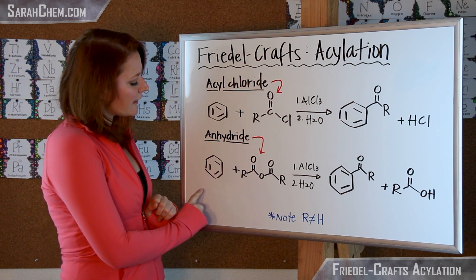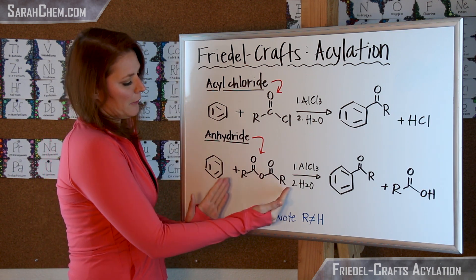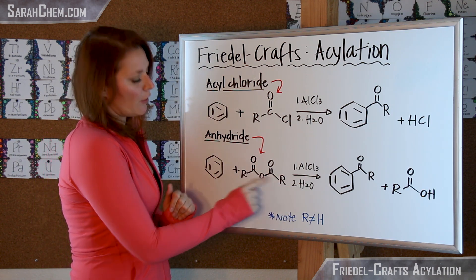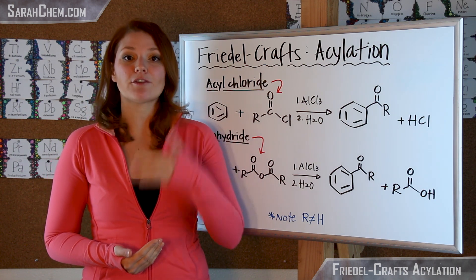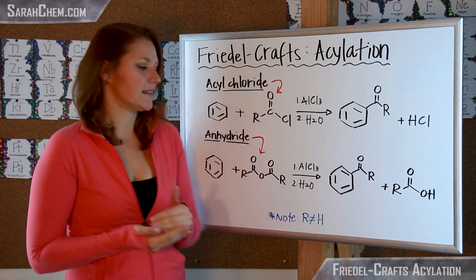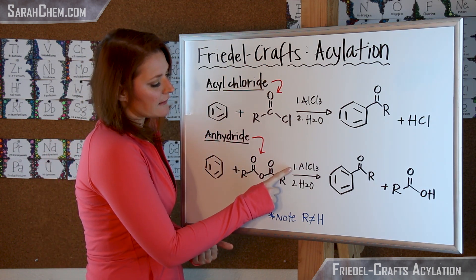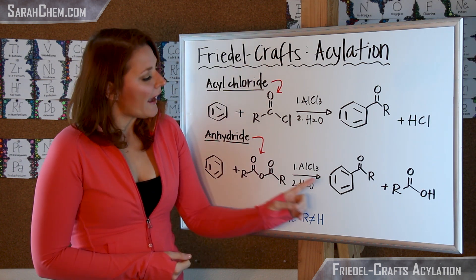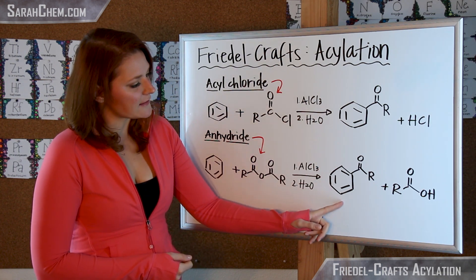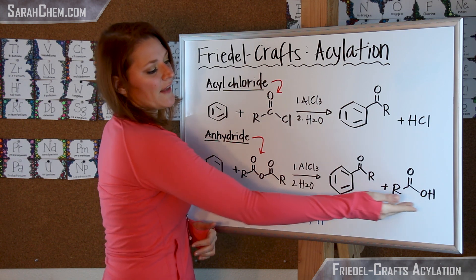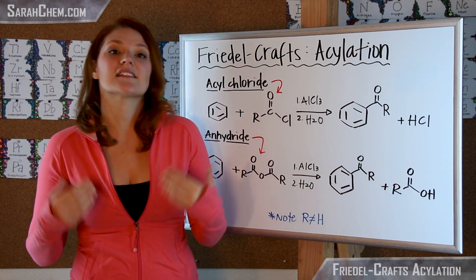Alternatively you could use an anhydride in this case here, so still a benzene group, but now you've got this group here where the R is once again going to be whatever it is you want to attach to that benzene, and then once again AlCl3 followed by water, and then here you can see you make exactly the same thing, whatever that R group is, and then in this case the byproduct though is different.